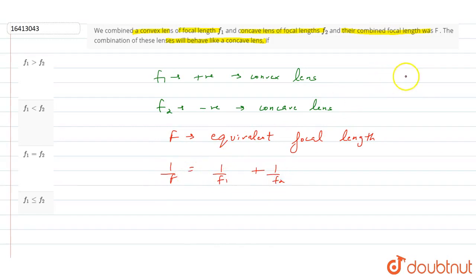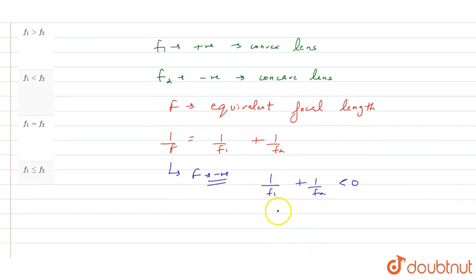The combination of these lenses will behave like a concave lens, so the combination should be negative, meaning f should be negative.